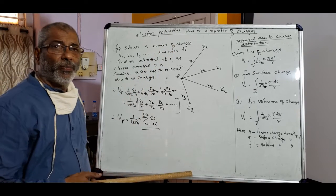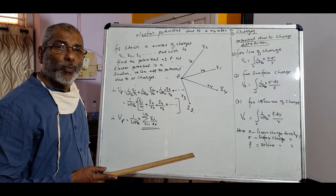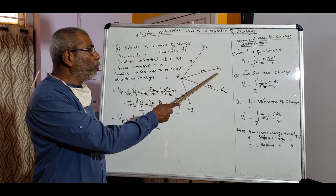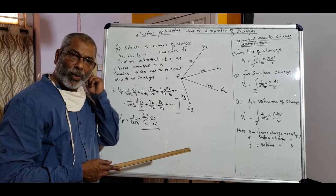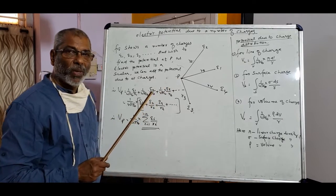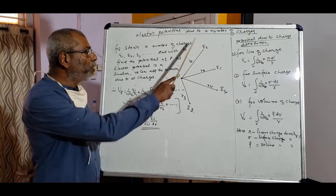Now we are going to discuss the electric potential due to a large number of charges present in the space. Here you see q1, q2, q3, q4, etc. are located at different points in the space, and there is a point p here where we wish to calculate the electric potential due to all these charges.